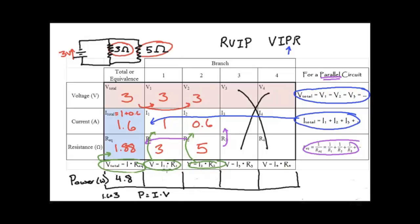For power at branch number 1, I'm going to take voltage multiply by current, so the power is 3. And for the power at branch number 2, I'm going to take voltage multiply by current, 1.8.